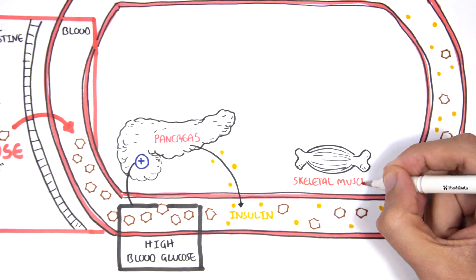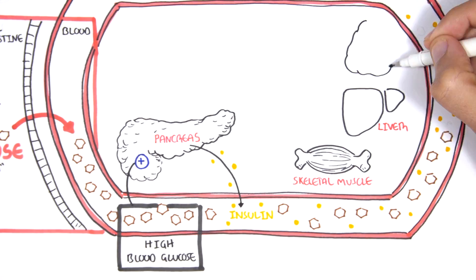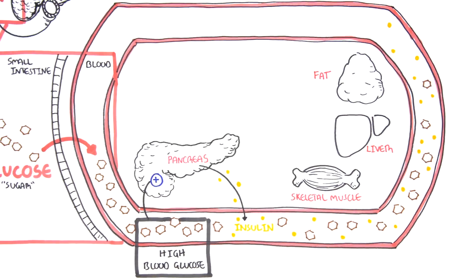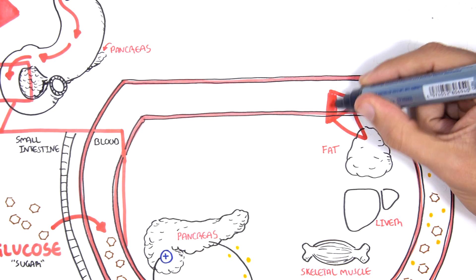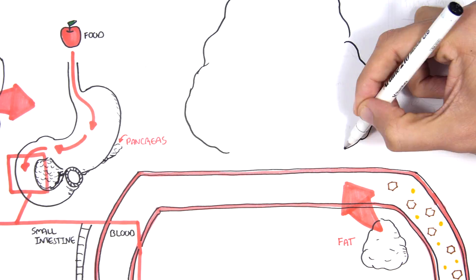Insulin targets cells such as skeletal muscle cells, liver cells and fat cells. Let us look at the fat cell in more detail and the effects insulin has on it.